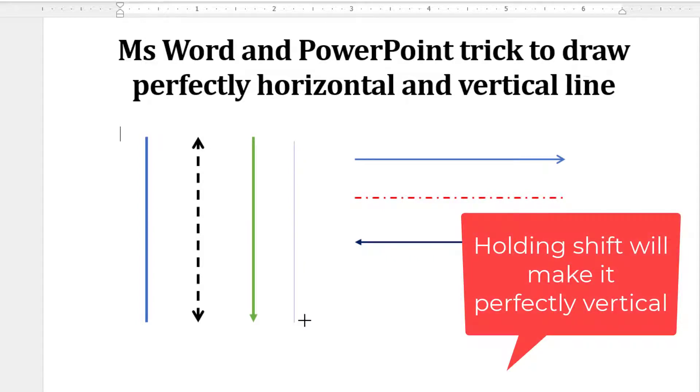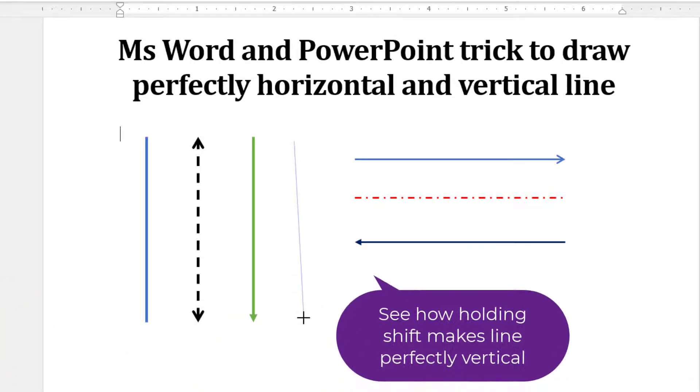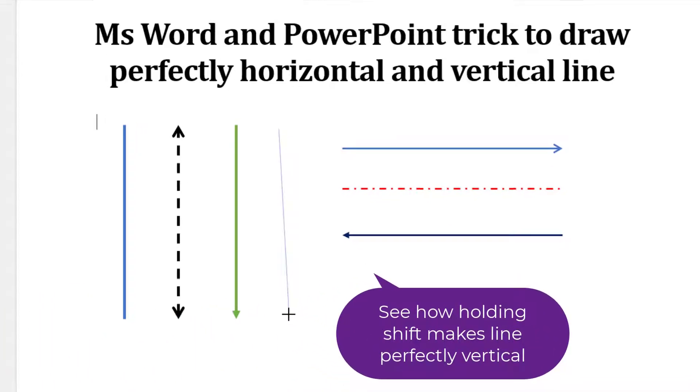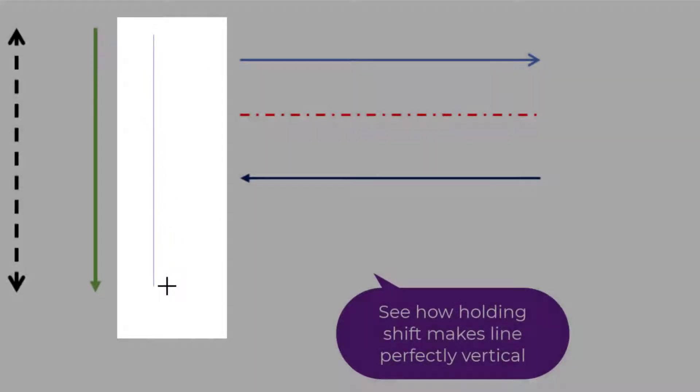Holding the Shift button will make sure that your line is perfectly vertical. This is my line and it is not exactly vertical, it is slightly inclined. Now the moment I hold the Shift key, you can see that the line becomes vertical.